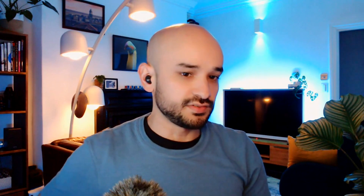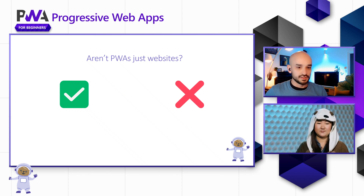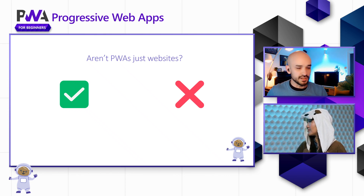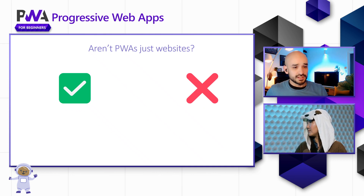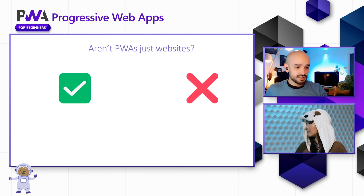We're going to be covering native integrations in depth, and I think one of the most interesting questions is just analyzing if PWAs are just websites. That kind of has a complex answer depending on how you think about what a website is. On one side, you can think they are websites, and on the other, they also have certain characteristics that make them a bit more than websites.